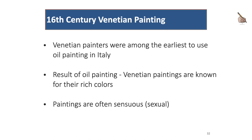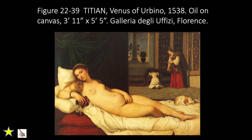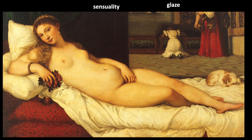In the 16th century, Venetian painters were among the earliest to use oil painting in Italy. As a result of oil painting, Venetian painters are known for their rich colors. Paintings are also sensuous. The glazing technique was also used. Here we have Titian's Venus of Urbino. Titian elevates to the status of classical mythology what is probably a representation of a sensuous Italian woman in her bedchamber. There is sensuality, as you can see from the softness of her skin. The dog was a symbol of fidelity and royalty.